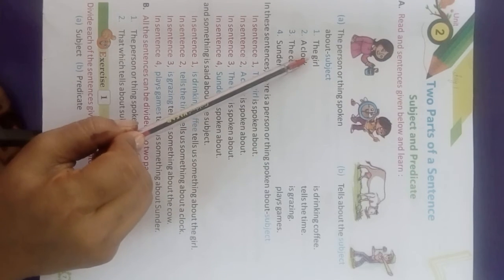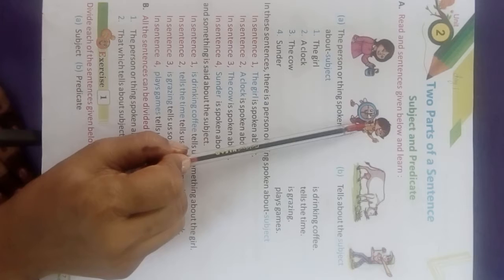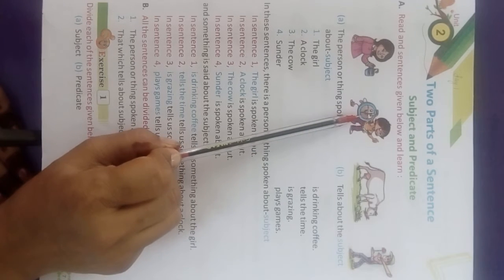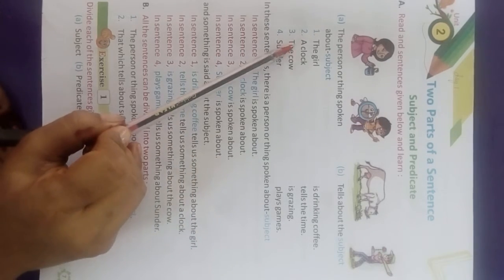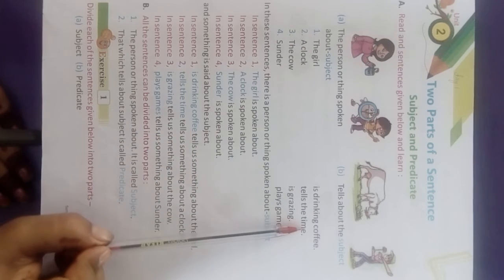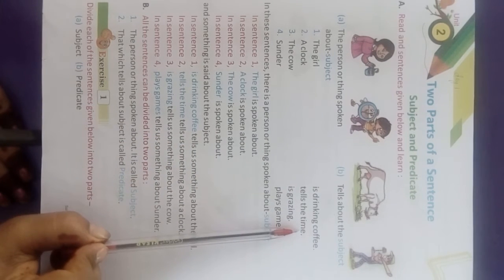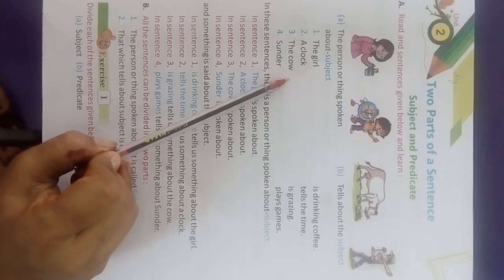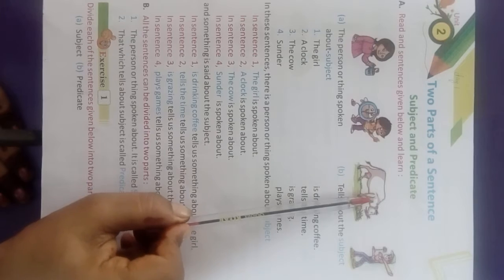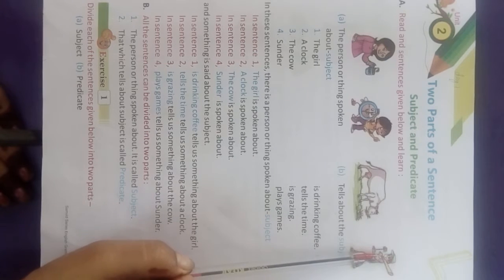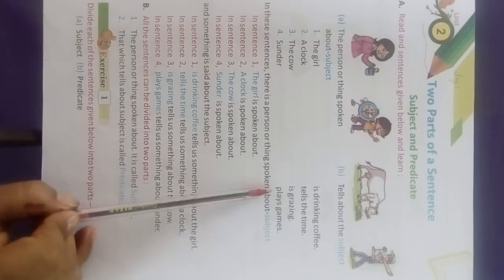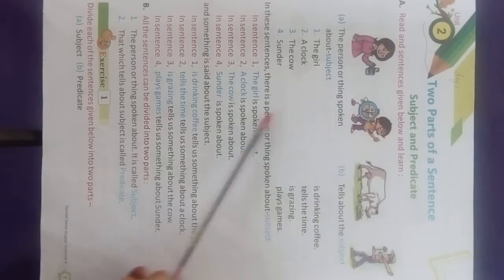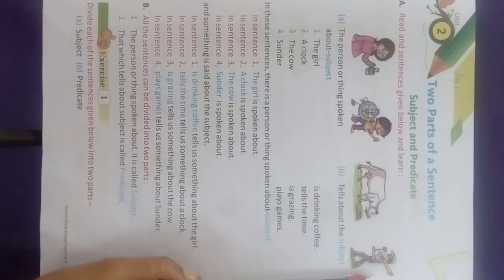The predicate briefly describes what the subject is doing. In the second picture, 'the clock' is the subject, and 'tells the time' is the predicate. We are talking about the clock — the clock is the subject.